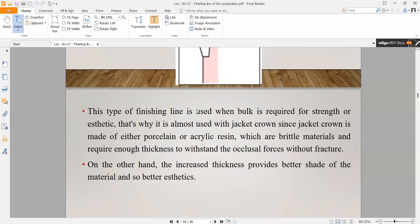This type of finishing line is used when bulk is required for strength or aesthetics. We use it when we need bulk. Why do we need bulk? The jacket crown made of either porcelain or acrylic resin - both types need bulk to gain strength because they are brittle materials and require enough thickness to withstand the occlusal force without fracture.